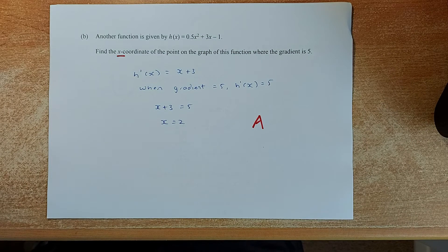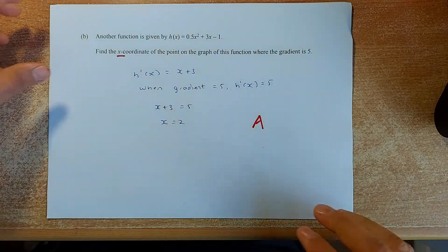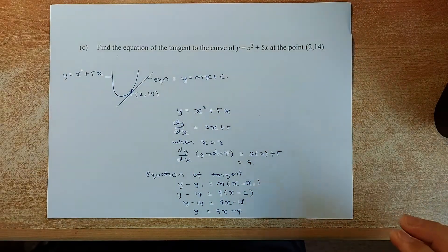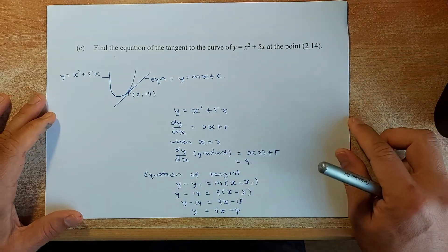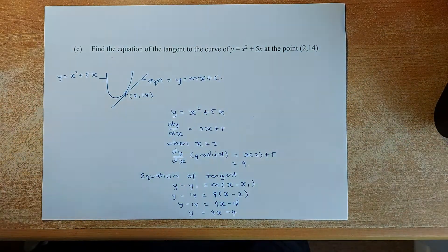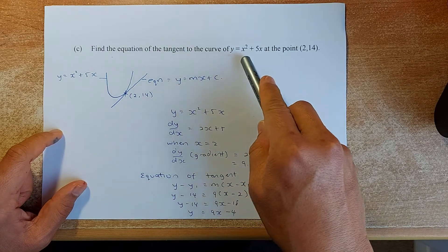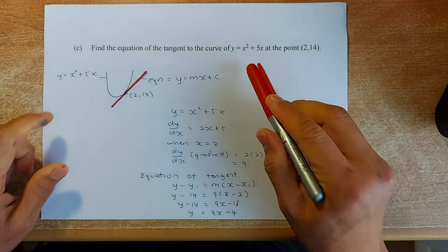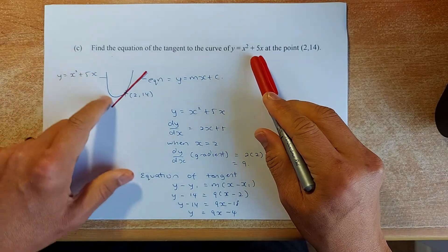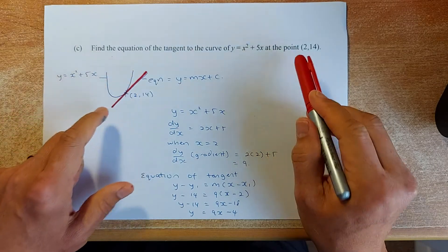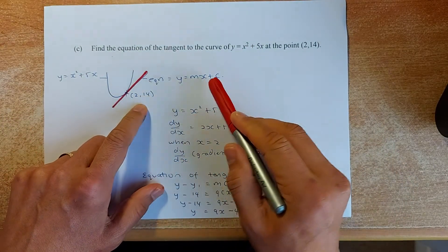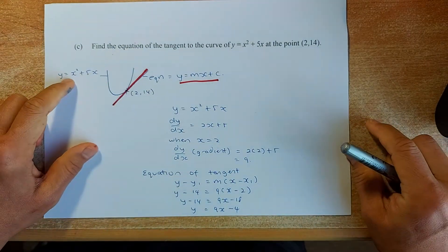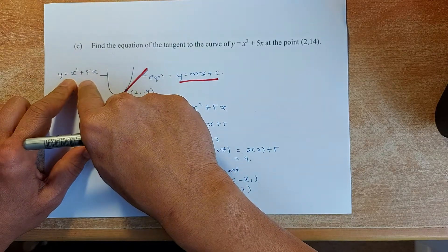If you understand when to differentiate and when to integrate, it's not too difficult. Now we move to Question 1c, which is a Merit question. We need to find the equation of the tangent to the curve y = x² + 5x at the point (2, 14). The equation of a straight line is y = mx + c, so we first need to find the gradient of the curve at x = 2.